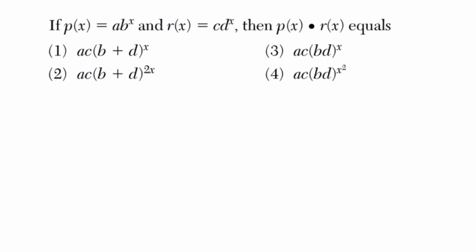Okay, so the wording in this is a little intense. We've got a p of x function that equals a times b to the x, and r of x, which equals c times d to the x. And they want to know what happens when we multiply these two things.